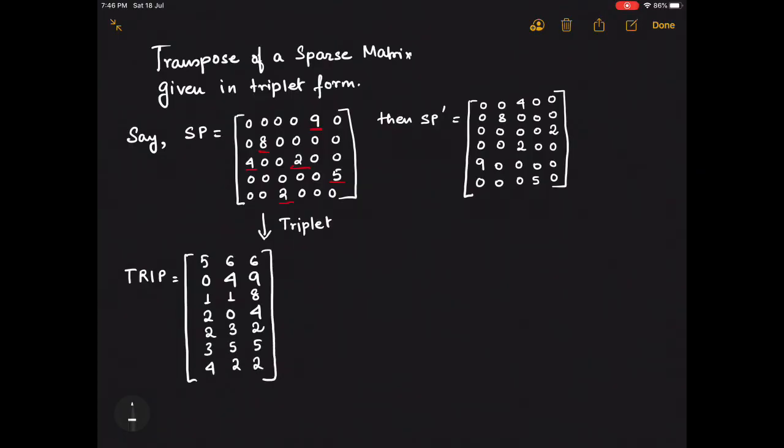Now if we look at the transpose of the TRIP matrix, that is TRIP dash, the only thing that we need to do is simply swap the 0th column and the 1st column of the TRIP matrix. Accordingly we get the matrix TRIP dash.